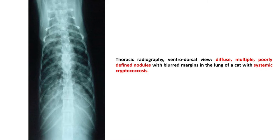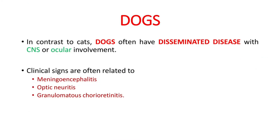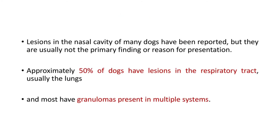In dogs, in contrast to cats, dogs often have disseminated disease with CNS or ocular involvement. Clinical signs are often related to meningoencephalitis, optic neuritis, and granulomatous chorioretinitis. Lesions in the nasal cavity of many dogs have been reported but are usually not the primary finding. Approximately 50% of dogs have lesions in the respiratory tract, usually the lungs, and most have granulomas present in multiple systems.